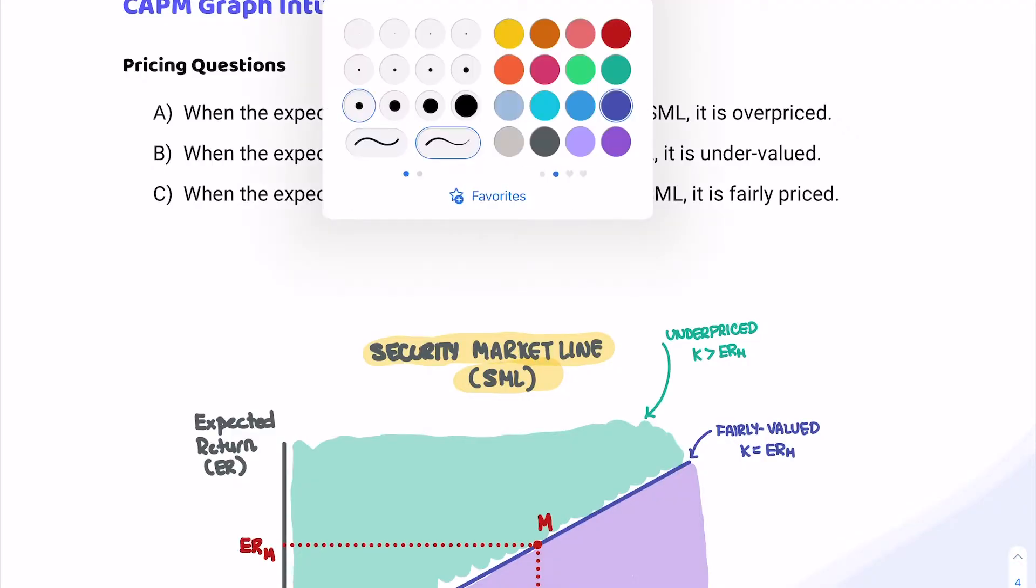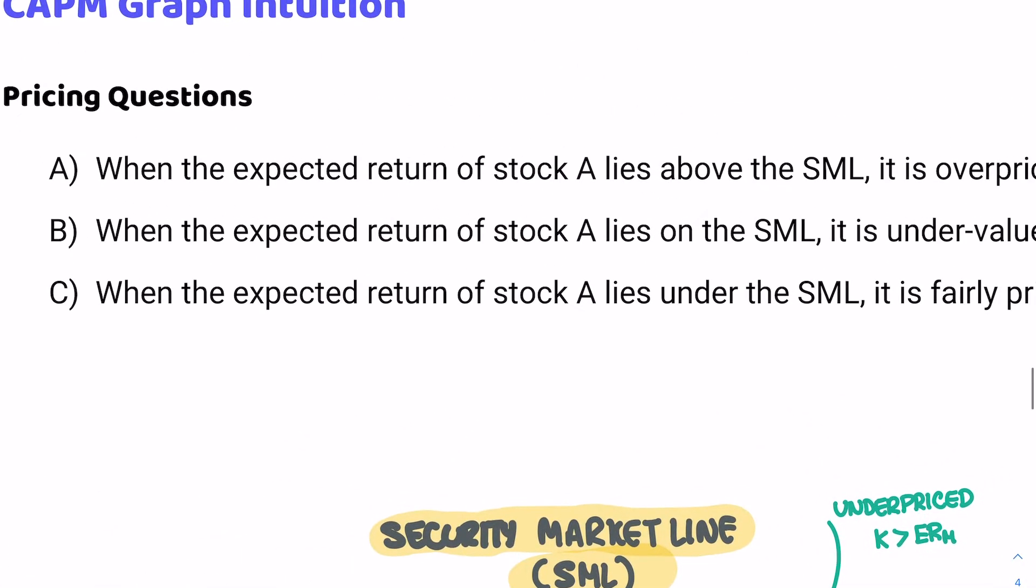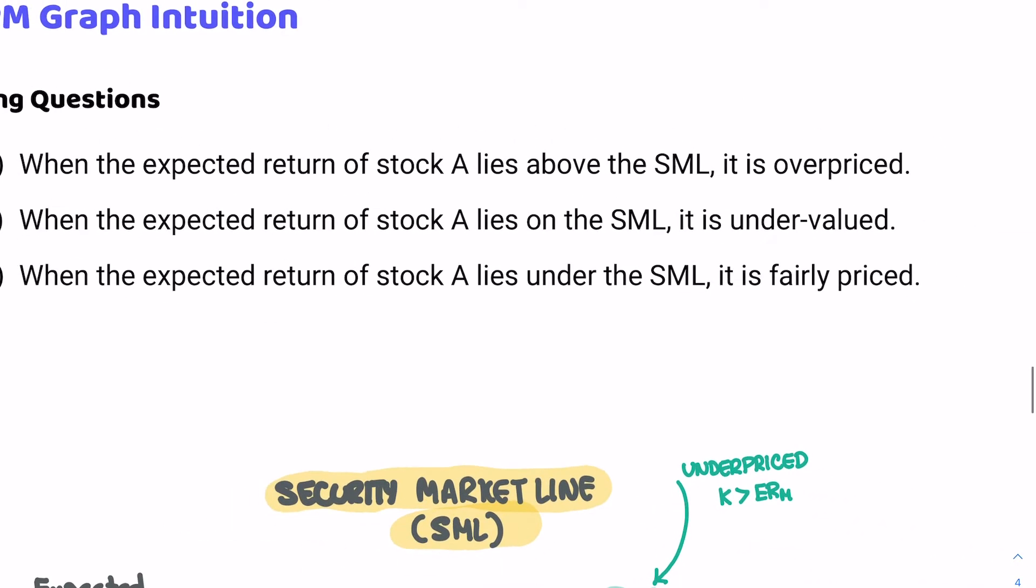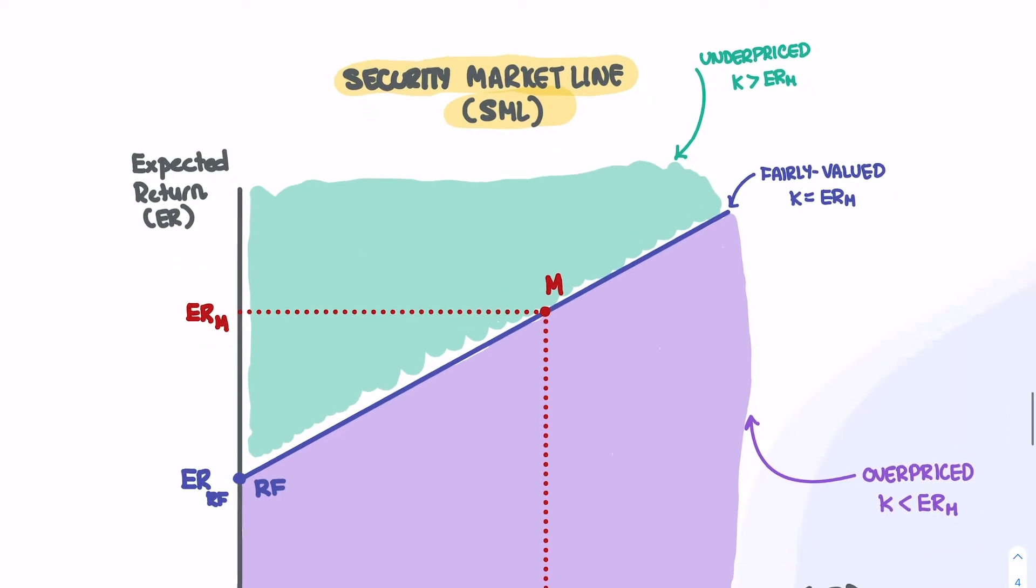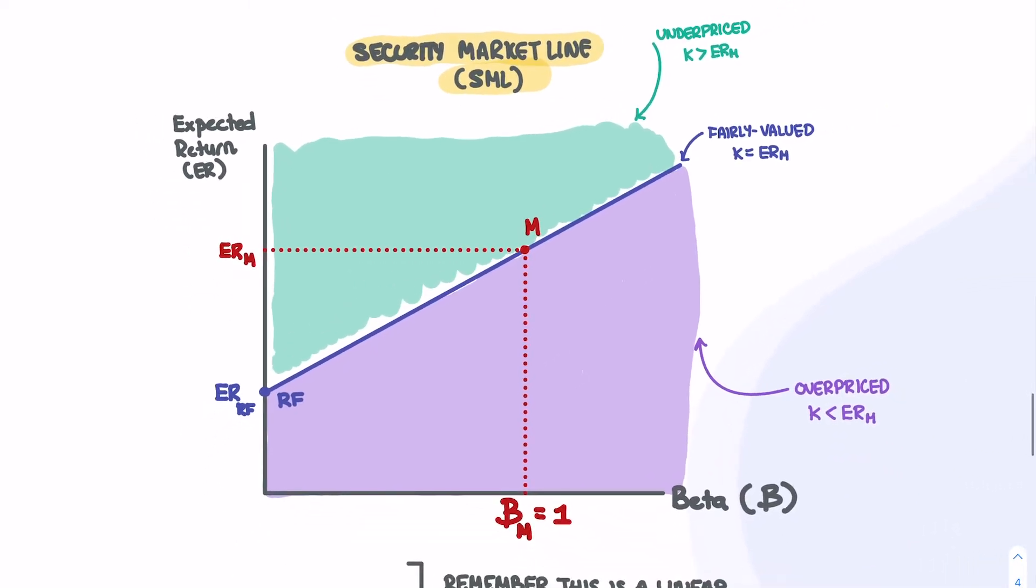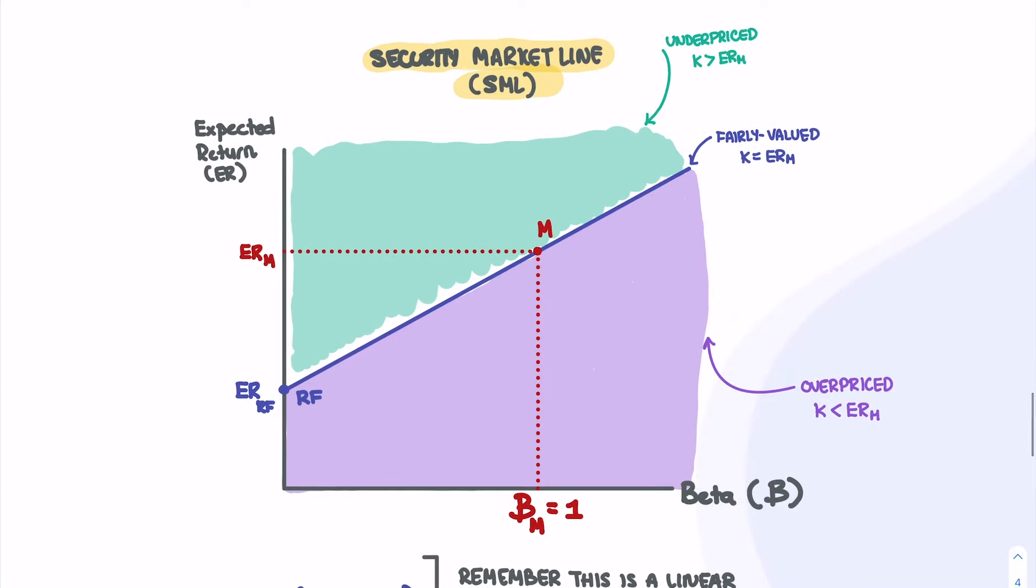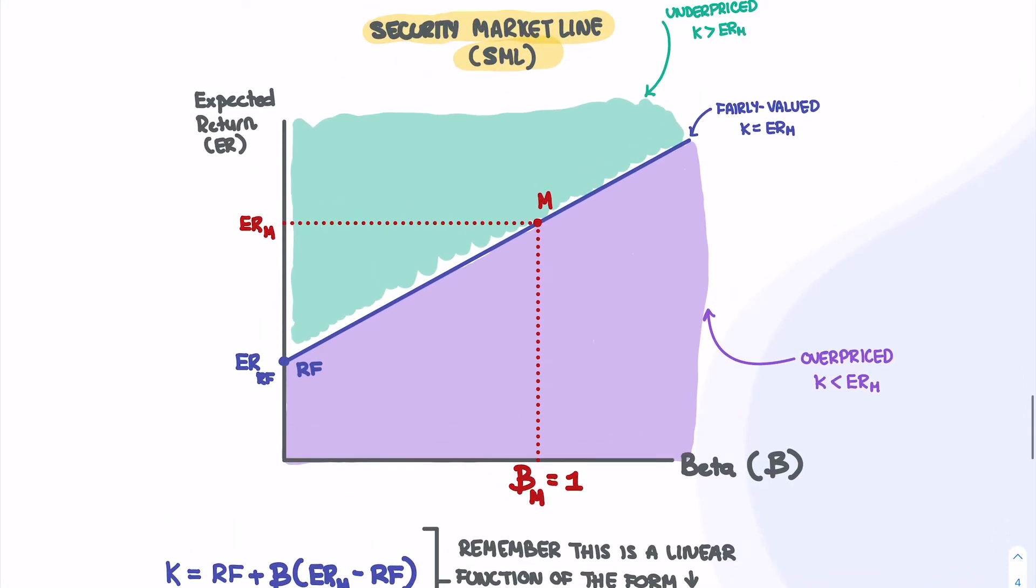And that's going to empower you to do well on your exam. As you can see on the screen right now, we have three different prompts discussing this concept of being overpriced, undervalued, or fairly priced. Before we do anything, we're going to look at our graph and get a better feel of what the Security Market Line is all about.